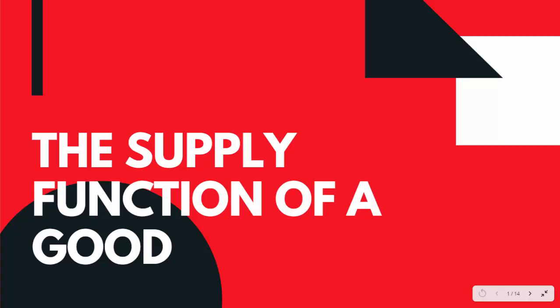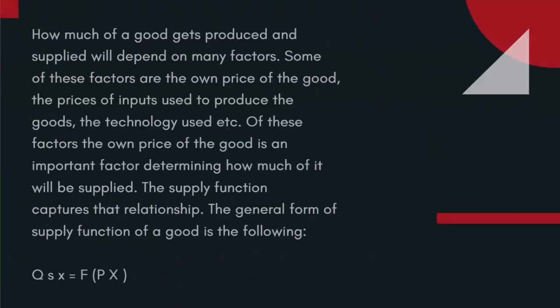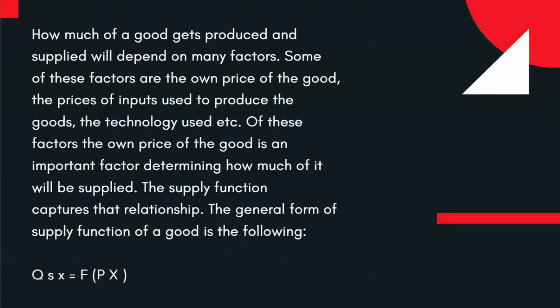The Supply Function of a good. How much of a good gets produced and supplied will depend on many factors. Some of these factors are the own price of the good, the prices of inputs used to produce the goods, and the technology used. Of these factors, the own price of the good is an important factor determining how much of it will be supplied. The Supply Function captures that relationship.